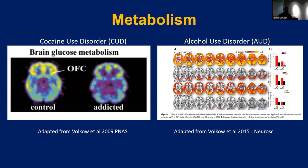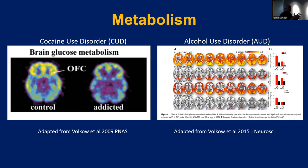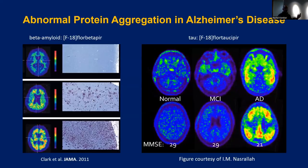What can we ask with PET? It comes down to whatever you can design radiochemically to look for. One major question is metabolism. Data from Nora Volkow, director of NIDA, showed that cocaine use disorder is associated with globally depressed metabolism, especially in the orbital frontal cortex. She also showed that alcoholism is associated with somewhat reduced metabolism, with further changes after an alcohol challenge.